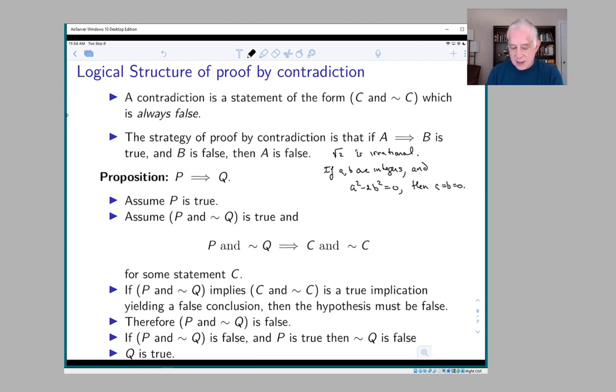That's worth thinking about if it doesn't make sense. We kind of worked that out earlier. The strategy then for a proof by contradiction is you assume that your hypothesis is true.